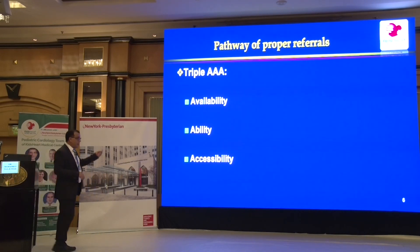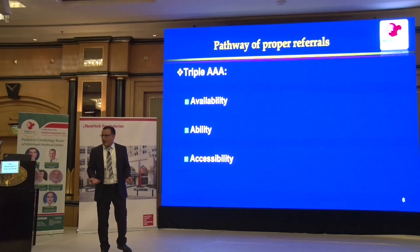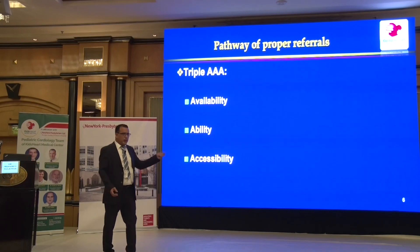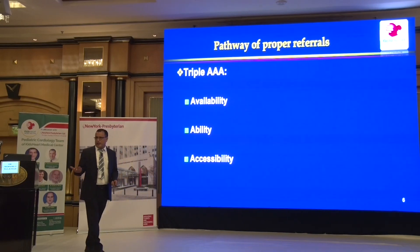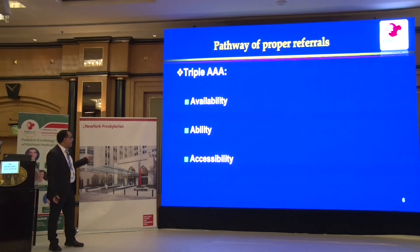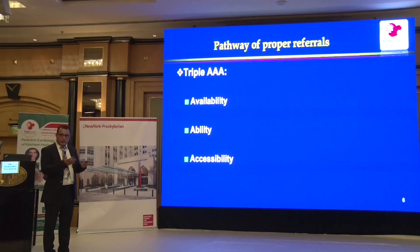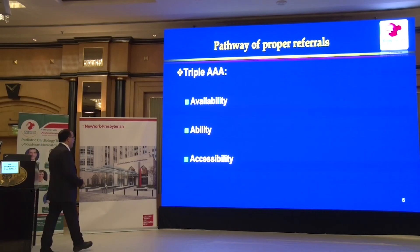The first A is Availability. When I call Dr. Ali or Dr. Muhammad, I should find him — he's available, not one week here and one week in another country. Availability for any sub-specialty is a must. The second A is Ability: having well-trained people who practice in an ethical way.